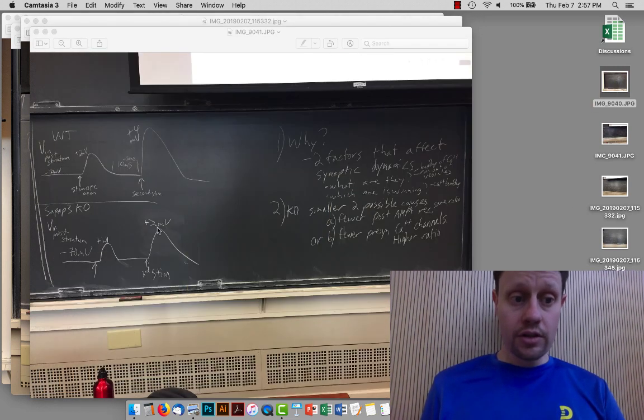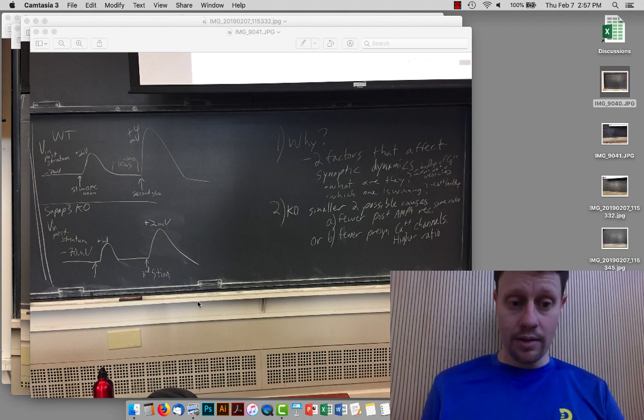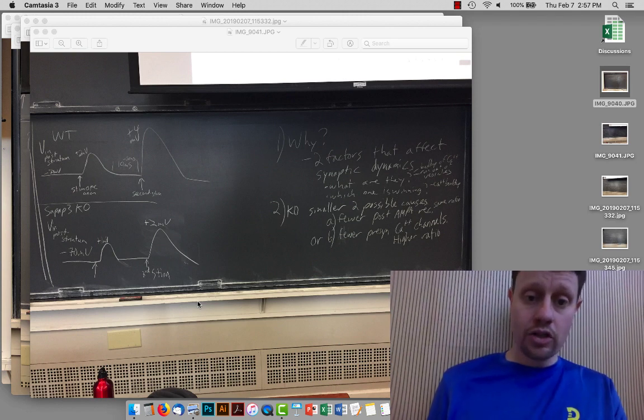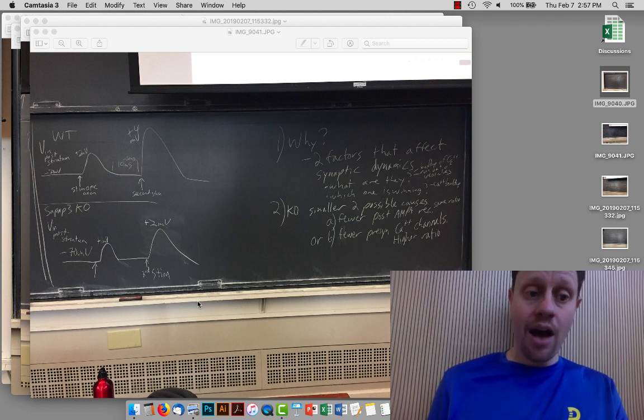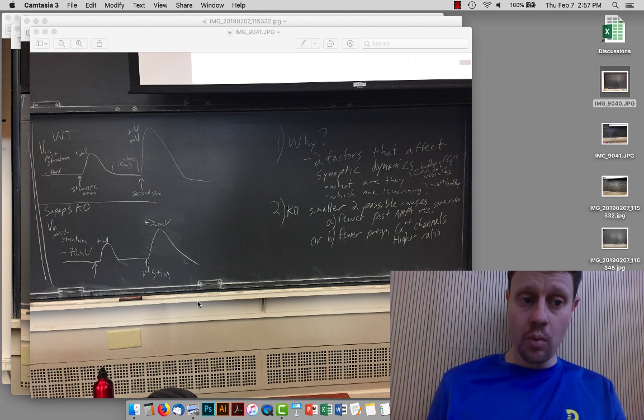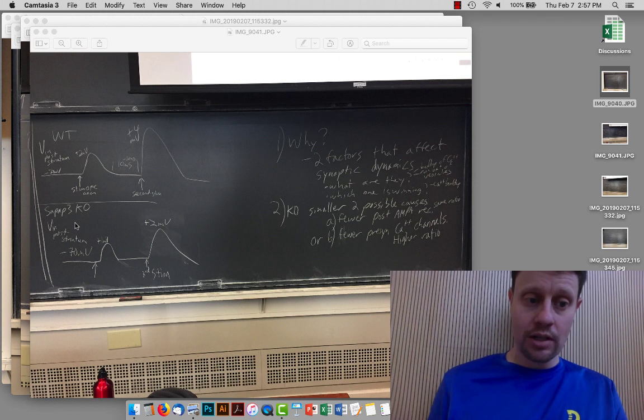In the first study that we talked about, we finished up with the paper on SAPAP3 mice. The final question that they asked is, how do synapses differ in the SAPAP3 mice versus the wild-type control? By SAPAP3 mice, I mean mice that are lacking the SAPAP3 gene.